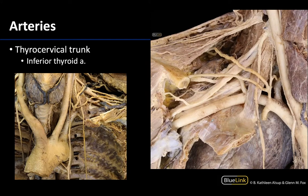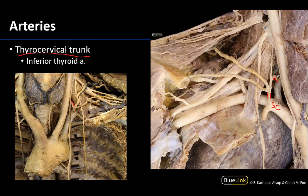The last artery to focus on in this session supplies the inferior portions of the thyroid gland as well as the majority of the parathyroid glands — this is the inferior thyroid artery. This is not a branch of the external carotid, but rather a branch of the thyrocervical trunk, which is a branch of the first part of the subclavian artery. The relatively short thyrocervical trunk almost immediately branches into three to four branches, with the one traveling medially toward the inferior thyroid gland being the inferior thyroid artery.